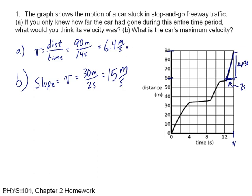The value from part A is the average velocity — it just considers the total distance over the total time. The instantaneous velocity, on the other hand, is the velocity at a particular instant.